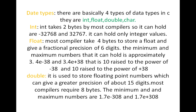Float: most compilers take 4 bytes to store a float and give a fractional precision of 6 digits — meaning 6 digits after the decimal point. The minimum and maximum values a float can hold are approximately 3.4e-38 and 3.4e+38, which is 10 raised to the power of -38 and +38.